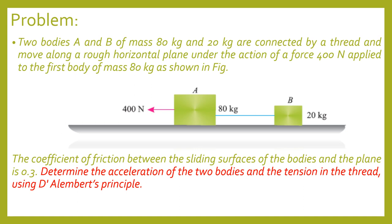We already know D'Alembert's Principle equation is F minus MA equal to 0. There are two bodies: one of mass 80 kg and the other of mass 20 kg. They are connected by a thread, so the thread will have a tensile force, and an external force of 400 N is acting on body A. From the diagram, we can say both bodies will move in the left-hand side direction with an acceleration A.